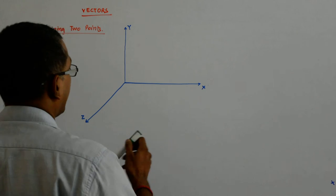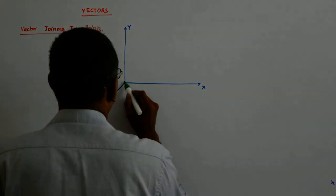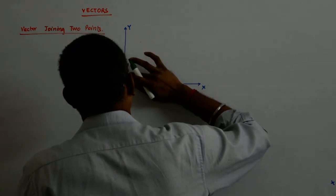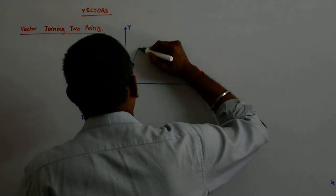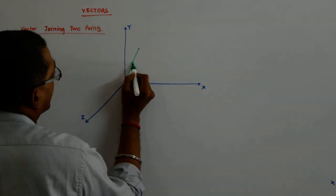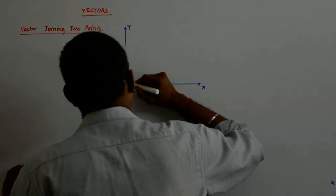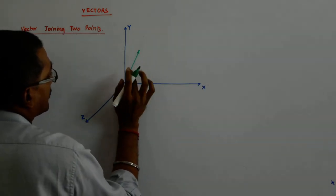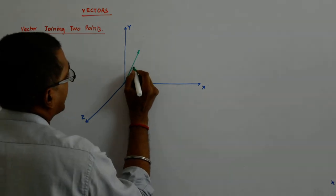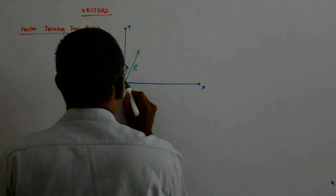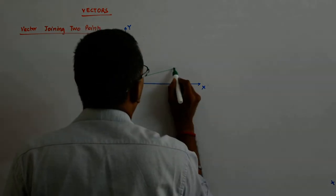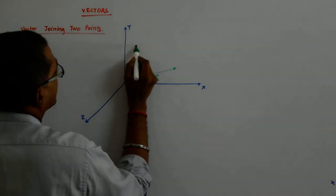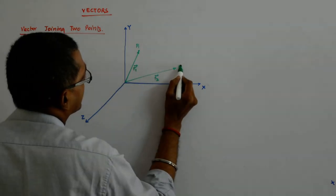So we have maybe this is a point. This is a point and this is its corresponding position vector. So this is r1 and similarly there could be another point like this and the corresponding vector is r2. So let us say this is P1 and let us say this is P2.